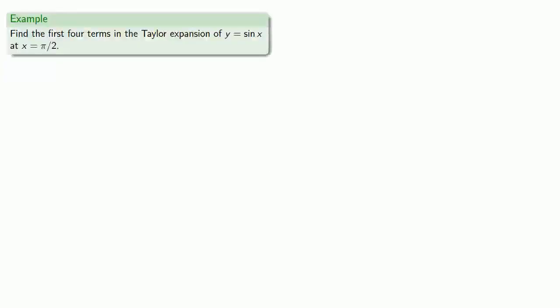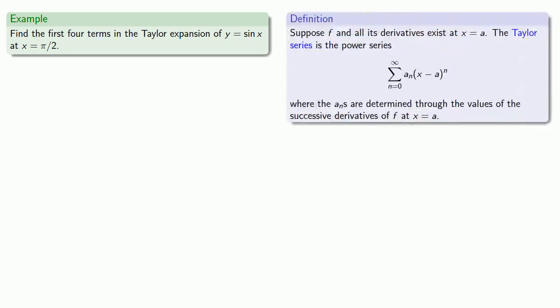Let's find the first four terms in the Taylor expansion of y equals sine of x at x equals π over 2. We assume that sine of x is a Taylor series expansion centered around x equals π over 2.